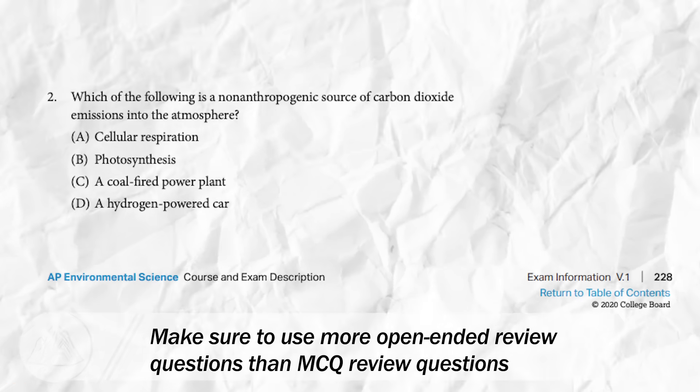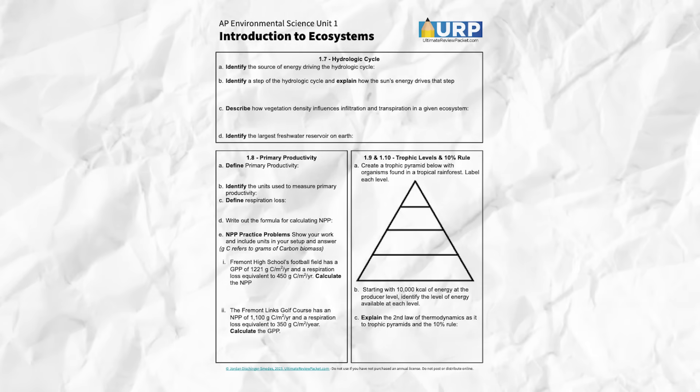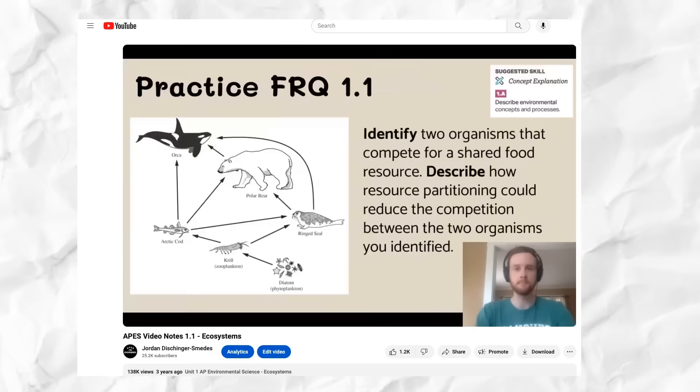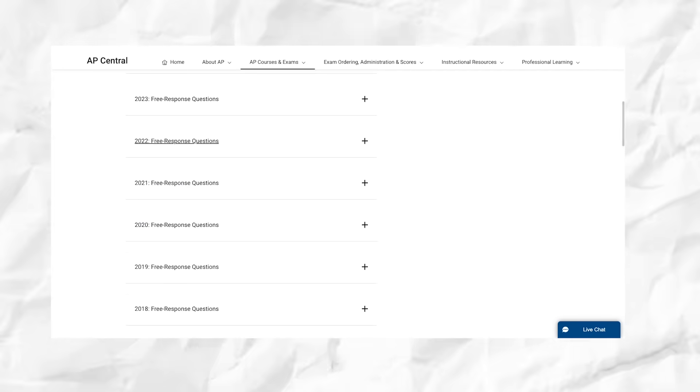Practice MCQs are an okay resource to use some of the time, but you shouldn't rely on them alone. MCQs are like lifting weights using machines — you do have to recall the correct information, but you have possible answers to pick from guiding your process. You really want the bulk of your review to be active recall using open-ended questions — like study guide questions in the Ultimate Review Packet, mini FRQs at the end of videos, or released exam FRQs from AP Central. These methods require you to pull information out of your brain, format it into sentences, sift through what you know, and use it to answer a question.